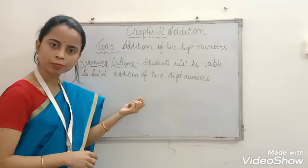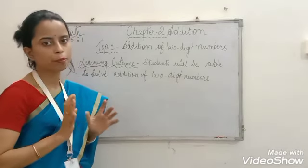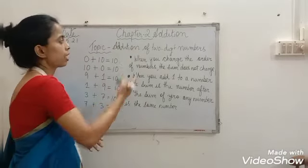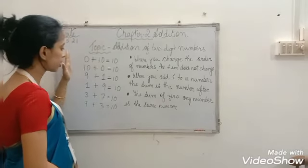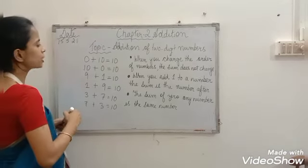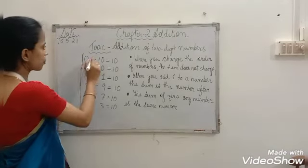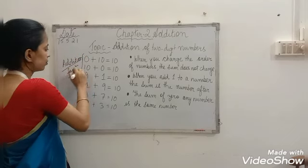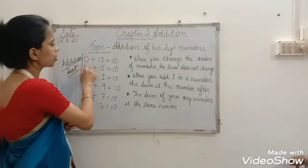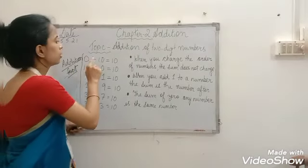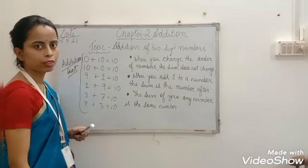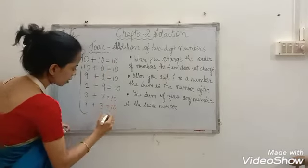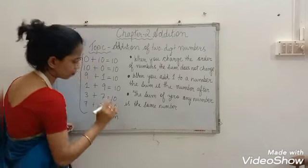I will show you one addition fact along with the points which you have to remember. In addition, with numbers we use the plus symbol and equals sign. When we add two numbers, we get their sum. The answer of addition is called sum — S-U-M.